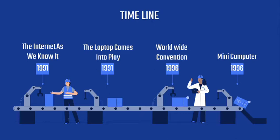In 1996, there is the invention of the World Wide Web Convention. The first internet convention was held. Also in 1996, the mini computers. Nokia introduced a phone that had internet capabilities, starting a revolution of devices. There were small portable computers.